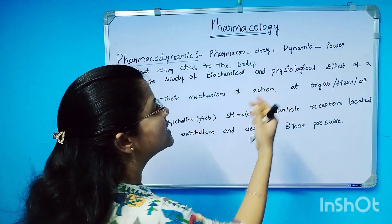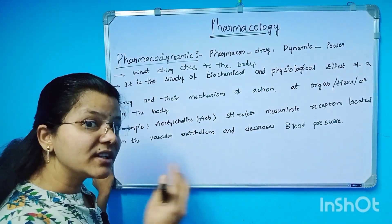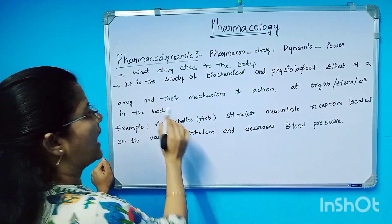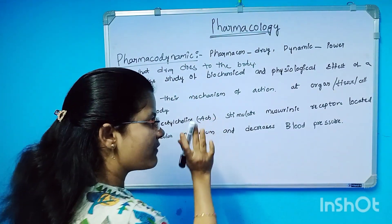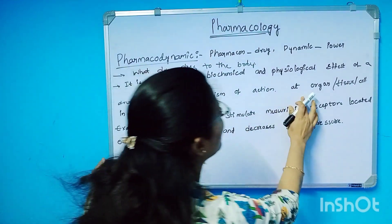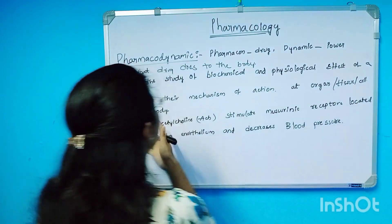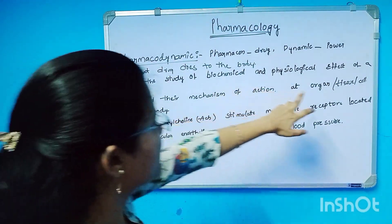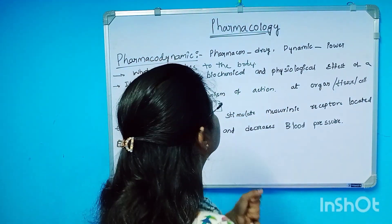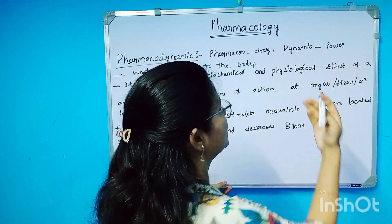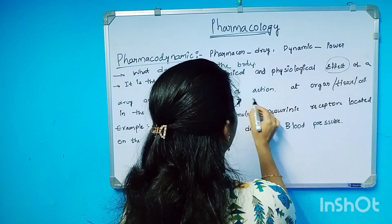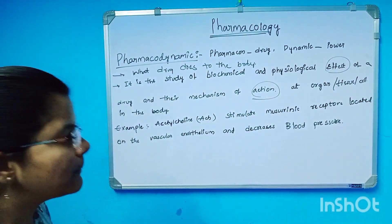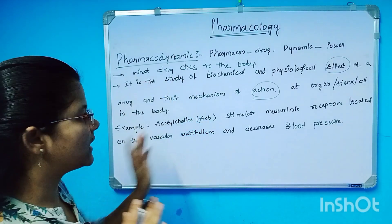Pharmacodynamics includes the mechanism of action of a drug on organs, tissues, and cells in the body. It studies the effect and action of a drug. That study is called Pharmacodynamics.